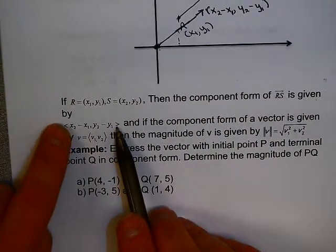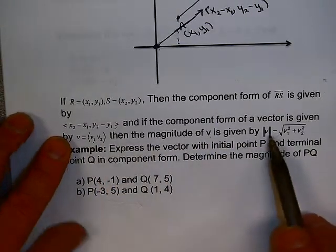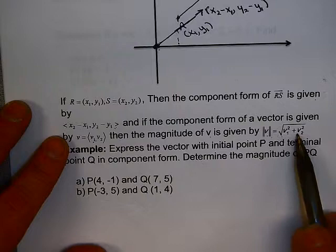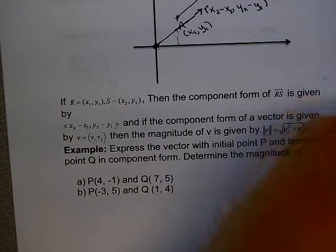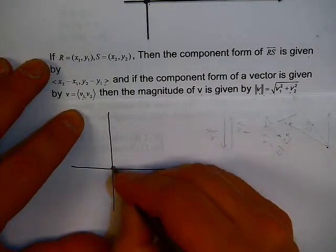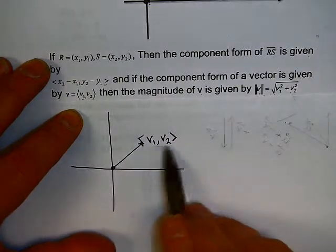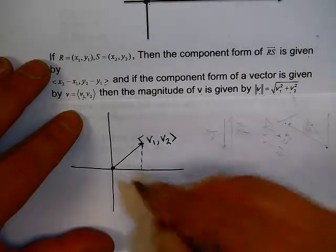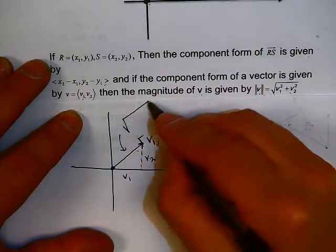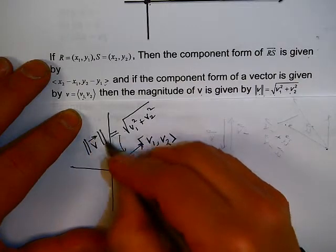This is called the component form of RS, given with the less-than/greater-than sign notation. If the component form of a vector is v = ⟨v₁, v₂⟩, then the magnitude of v is the square root of v₁ squared plus v₂ squared. If the tail is at the origin and the head is at (v₁, v₂), the length is nothing more than the Pythagorean theorem: v₁ squared plus v₂ squared, and we give that the name the magnitude of v.